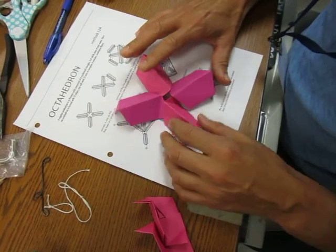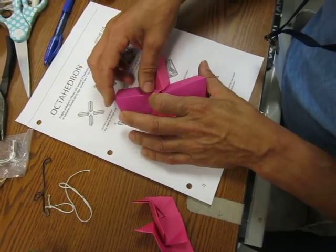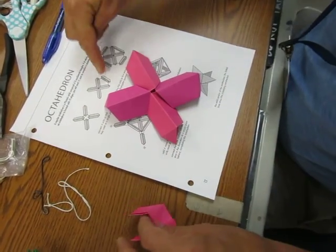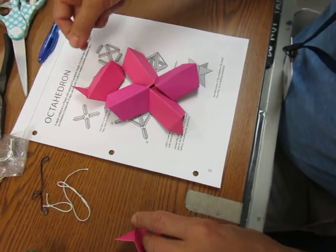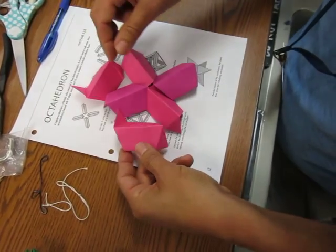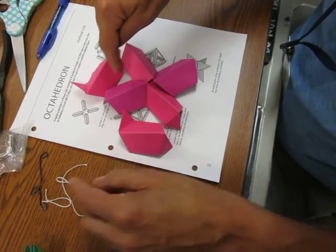Once you get these all in there correctly with some glue, then you're gonna follow these instructions which is you're gonna put one in here then one in here, and that starts to make the triangles.